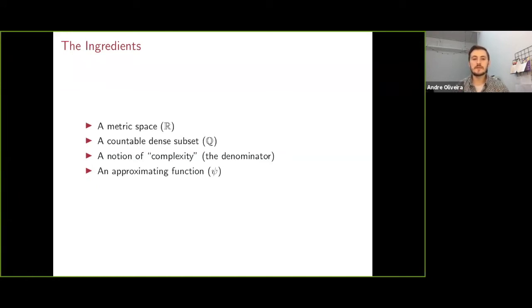But we can take these ingredients and put them in any other metric space or with any other countable dense subset and modify this notion of complexity and get new types of Khinchin-type theorems.